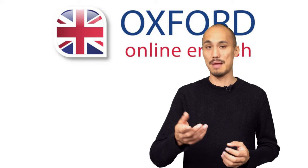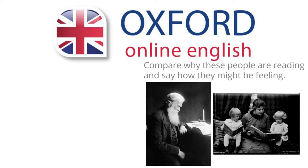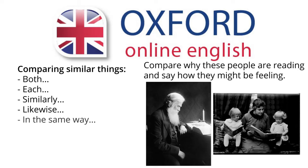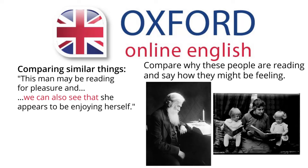Let's look at how to do this using pictures of people reading as an example. The question might be: compare why these people are reading and say how they might be feeling. For things that are similar, use language like 'both', 'each', 'similarly', 'likewise', or 'in the same way' and 'we can also see that'. For example: 'This man may be reading for pleasure and we can also see that she appears to be enjoying herself', or 'similarly, she appears to be enjoying herself', or 'in the same way, she appears to be enjoying herself.'